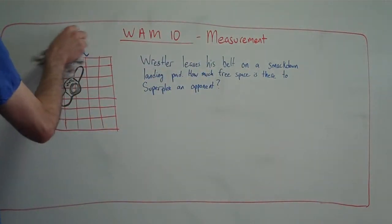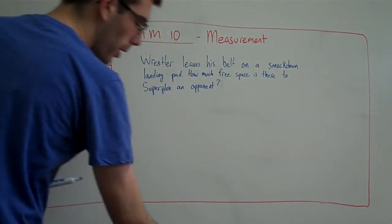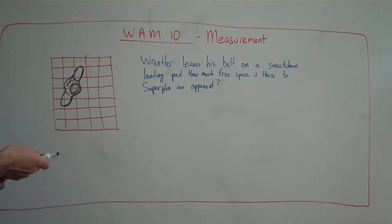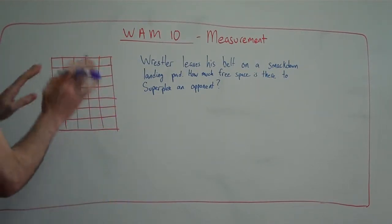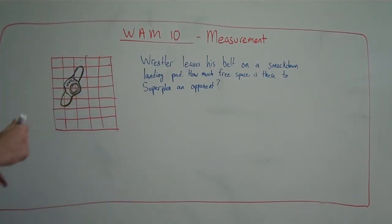So the question asks, how much free space is there to superplex an opponent, or how much space around the belt, this area around here, how much space is there to land in? Now, there's a couple different ways to do it, but this kind of question comes up on just about every provincial exam I've seen for WAM10, and the best way to tackle it is figure out the object that's in the way, and then take the entire square or rectangle and subtract out the one object that's in there.